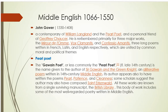John Gower was a contemporary of William Langland and the Pearl Poet, and a personal friend of Geoffrey Chaucer. He is remembered primarily for three major works written in French, Italian, and English respectively, united by a common moral and political theme. The Gawain Poet, also known as the Pearl Poet, a late 14th-century writer, is the name given to the author of Sir Gawain and the Green Knight, Pearl, Patience, and Cleanness — all known from a single surviving manuscript in the British Library.